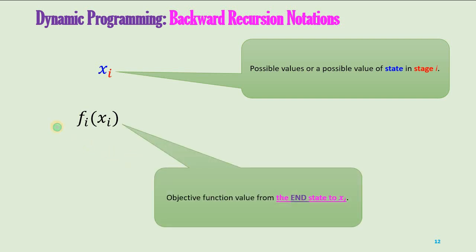However, there is a difference in the definition of fi(xi). Fi(xi) is now defined as the objective function value from the end state to xi. Notice the difference: in forward recursion, fi(xi) was the objective function value from the start state to xi. In backward recursion, it is defined as the objective function value from the end state to xi.